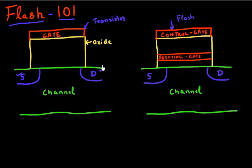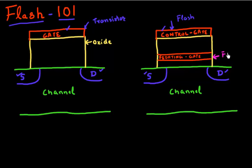A normal transistor has a source, a drain, and a gate electrode. Similarly, the flash memory cell also has a source, a drain, and a gate electrode. This one has a gate oxide, and this one also has a gate oxide. The only extra element in a flash memory cell is this extra gate — typically a polysilicon gate — which is called the floating gate.